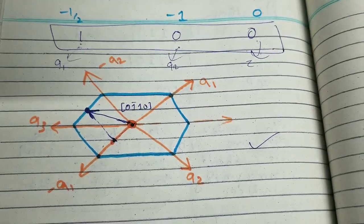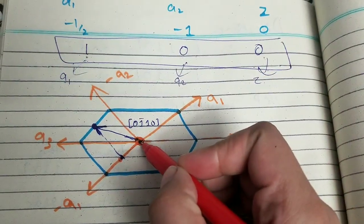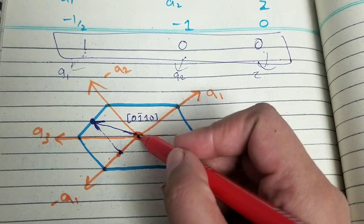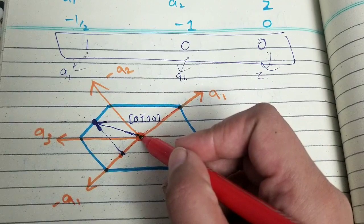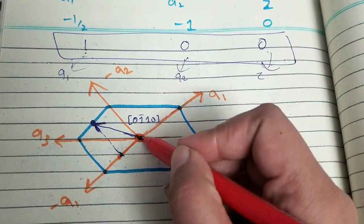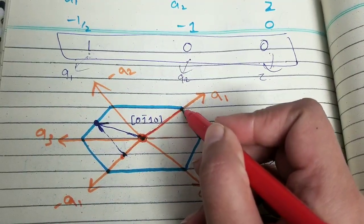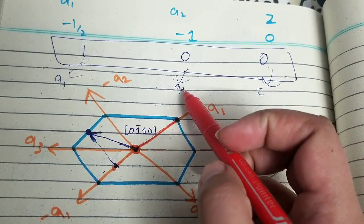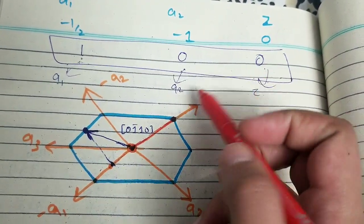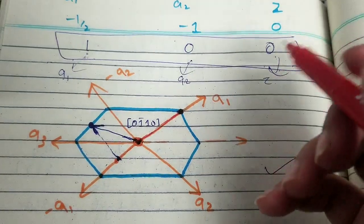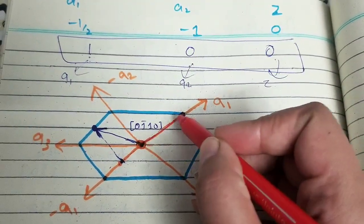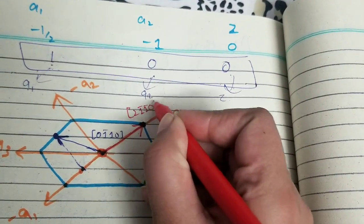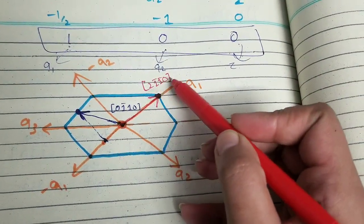From the origin, move one unit along the positive a1 direction — that is, from the origin to the far corner of the unit cell along a1. We move zero units along a2 and zero units along z, so no further movement is needed. This far corner is the final head point, and joining it to the origin gives the vector for direction [2 1̄ 1̄ 0].